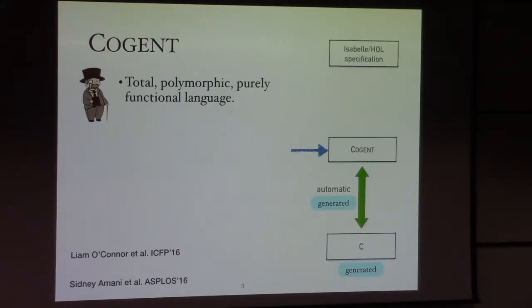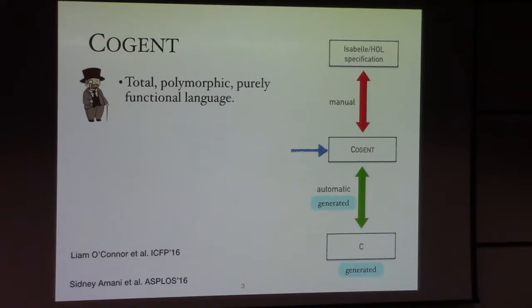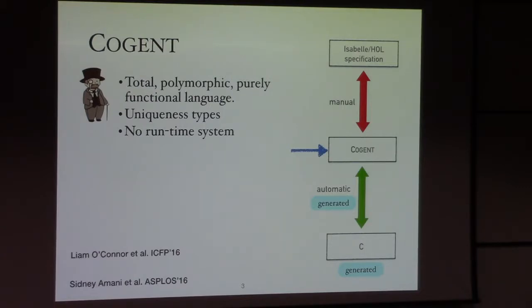On top of Cogent, the user manually specifies the behavior of that program in Isabelle's higher-order logic, and manually establishes a connection between Cogent and the high-level abstract spec, meaning that all the behaviors observed in the Cogent program can also be observed in the high-level spec. Cogent features a uniqueness type system which allows destructive updates, which are essential in writing high-performance, low-level code.